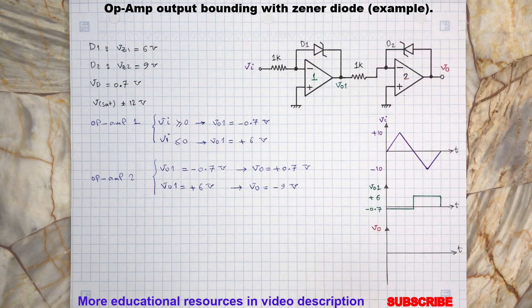Remember that D1 and D2 have different zener voltage ratings. D1 is rated for 6 volts and D2 is rated for 9 volts.